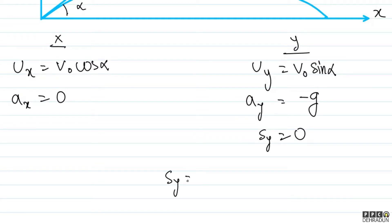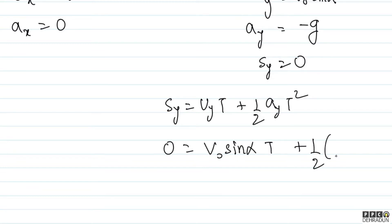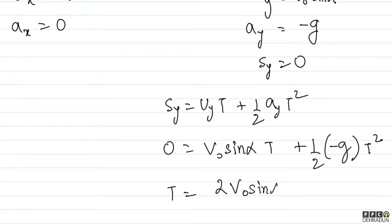I will use sy = ui·t + ½·ay·t². Here sy is equal to zero, so: v0 sin α · t + ½·(−g)·t² = 0. Solving this gives t = 2v0 sin α / g.